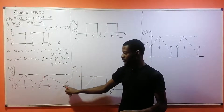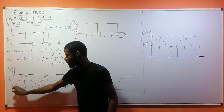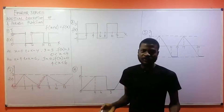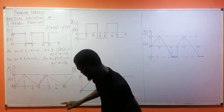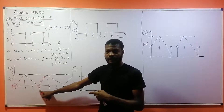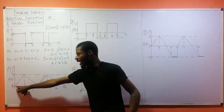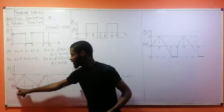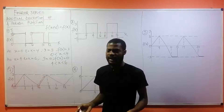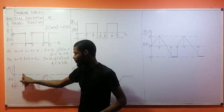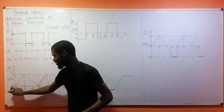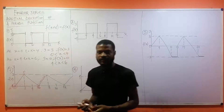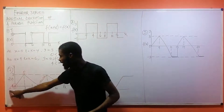If I analyze from point A to point B, I have the description I need. This distance is six, so six becomes the period, because from that part the function starts again the same way from the origin. I'm going to analyze from here to here, and I have two parts: A to B, and B to C.